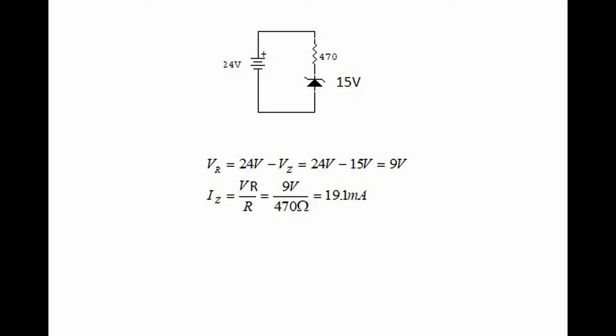We must always find the current through the zener diode. In this circuit we have a 24-volt source with a 470-ohm resistor in series with a 15-volt zener diode. The trick is to find the current through the resistor, which will then be the current through the zener diode.